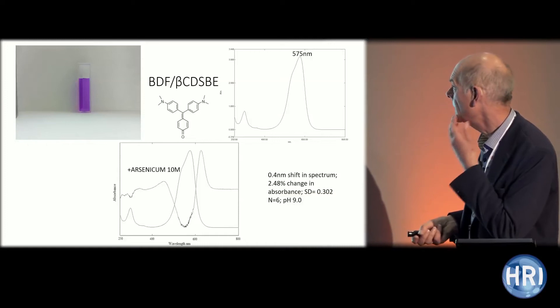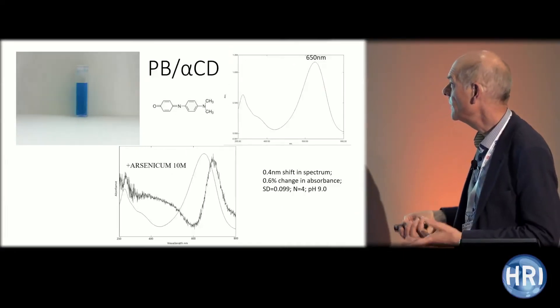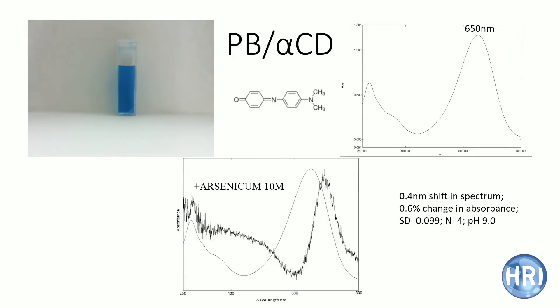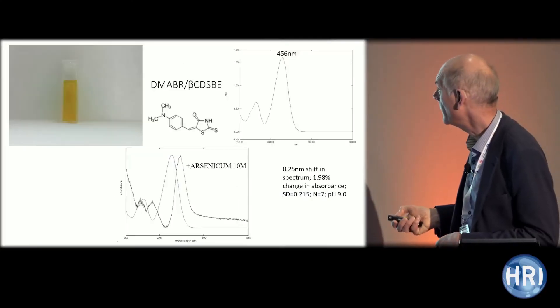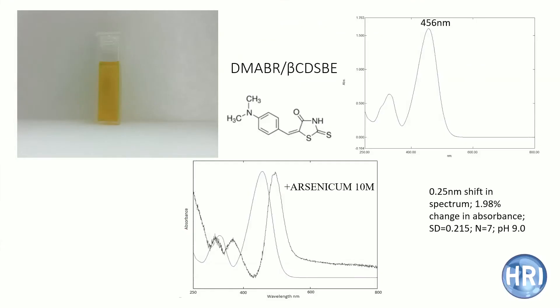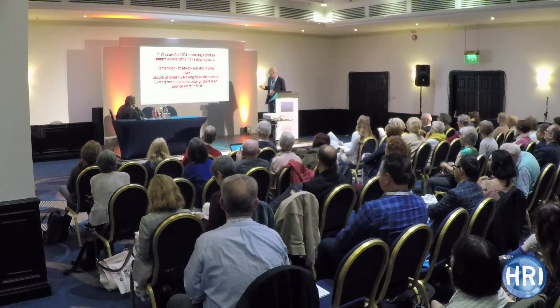Phenol blue, another positively solvatochromic dye, gives a shift of about 0.4 nanometres. The fourth positively solvatochromic dye, dimethylaminobenzylidene rhodamine, again gives a red shift of 0.25 nanometres. So all four positively solvatochromic dyes shift in the same direction — red — in the presence of arsenicum. You don't see that shift with controls.